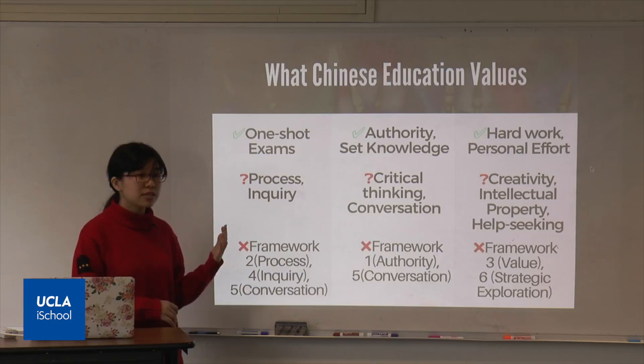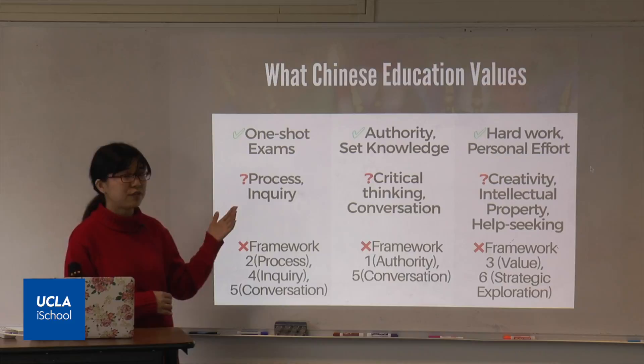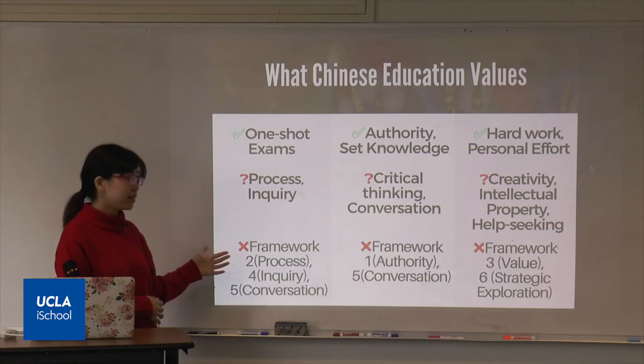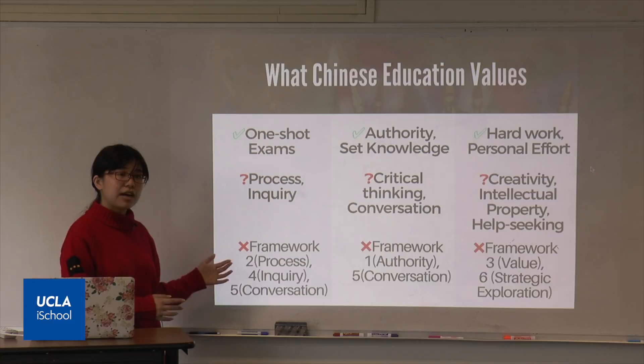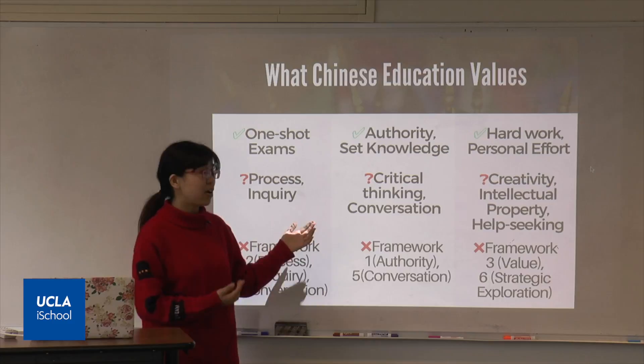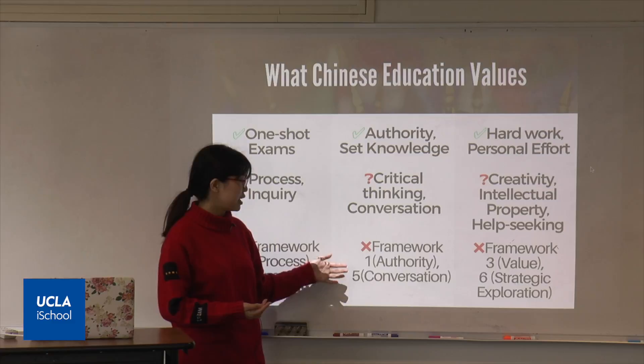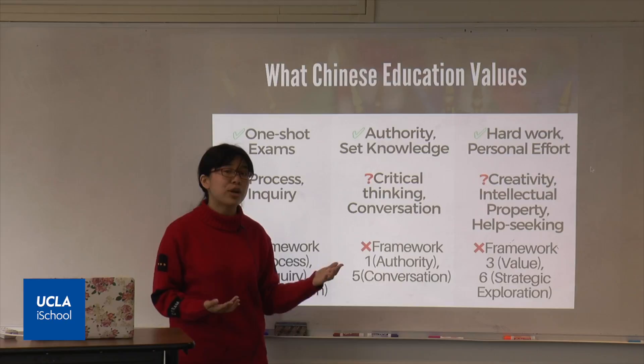If we look more into those six elements, we can see they are not well aligned with what Chinese education values. Chinese education really values standardized exams. As a result, the process-oriented frames — numbers two, four, and five — are not really something Chinese students are educated on from primary school. Also, Chinese education really values authority and set knowledge from textbooks. As a result, Chinese students might not be very good at critical thinking, conversations, or other things emphasized by frames one and two — that scholarship should be a conversation rather than just memorizing what teachers say.